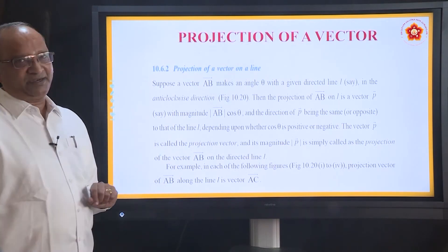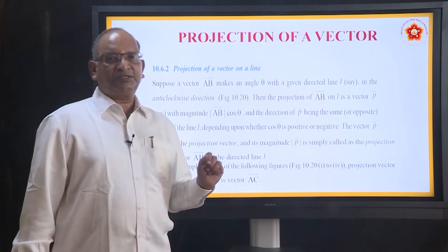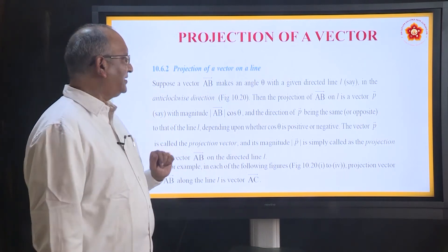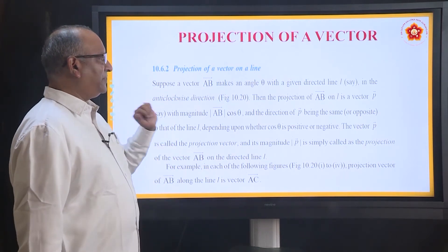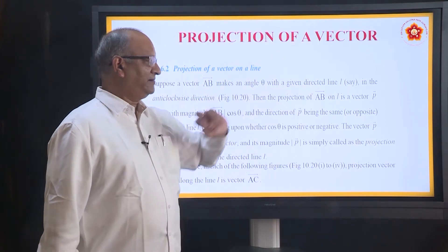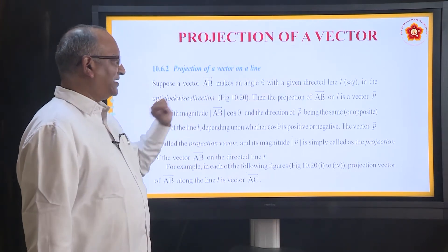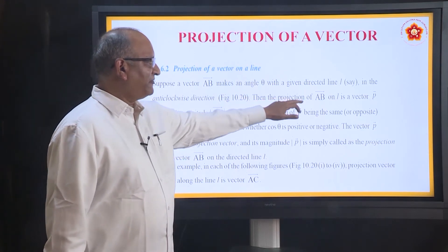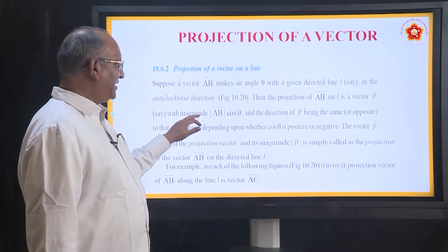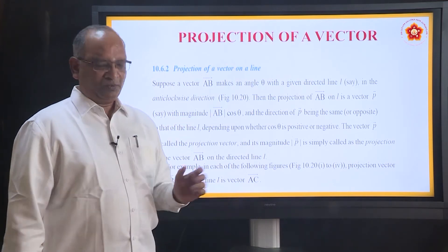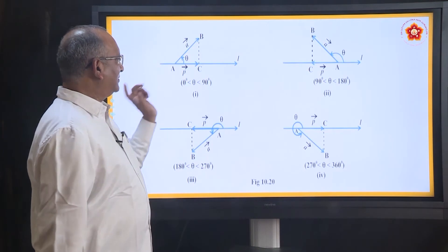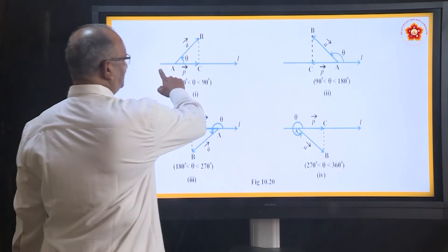Projection of a vector — this is also an important concept to learn, and it is not at all difficult. Suppose a vector AB makes an angle theta with a given directed line in the anti-clockwise direction. Then the projection of AB on L is a vector with magnitude AB cos theta.